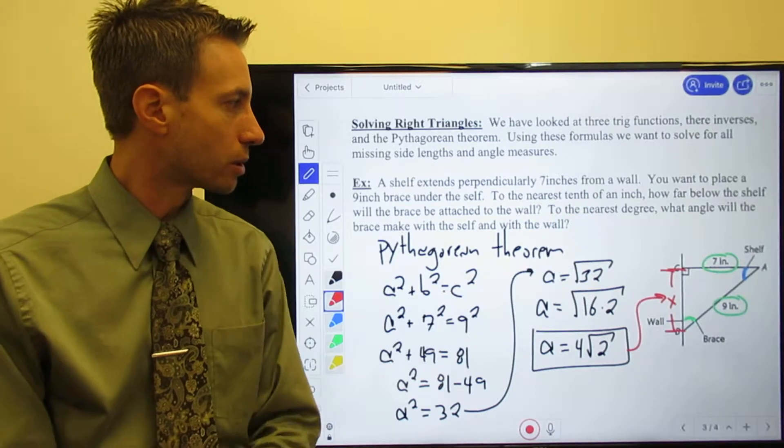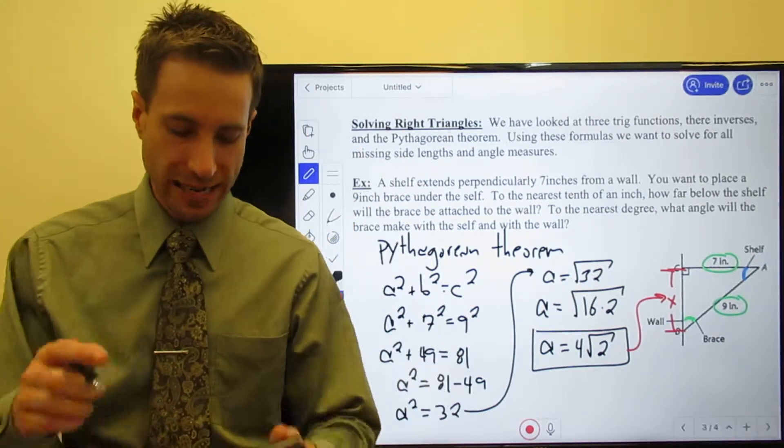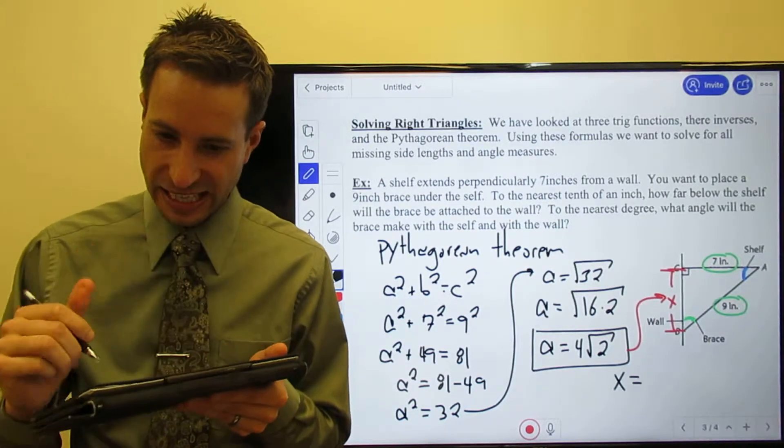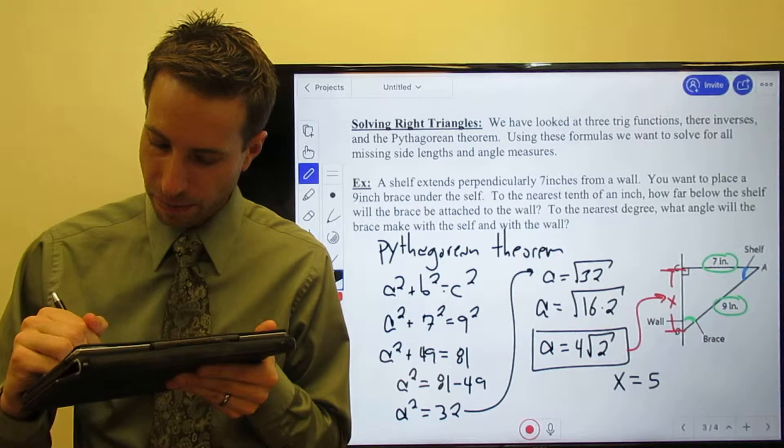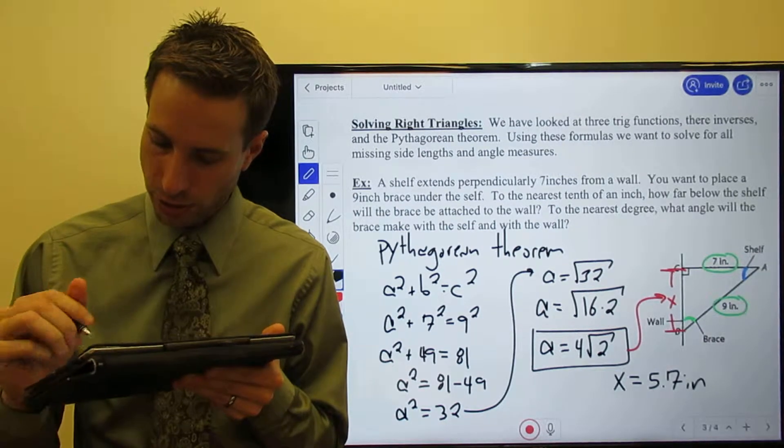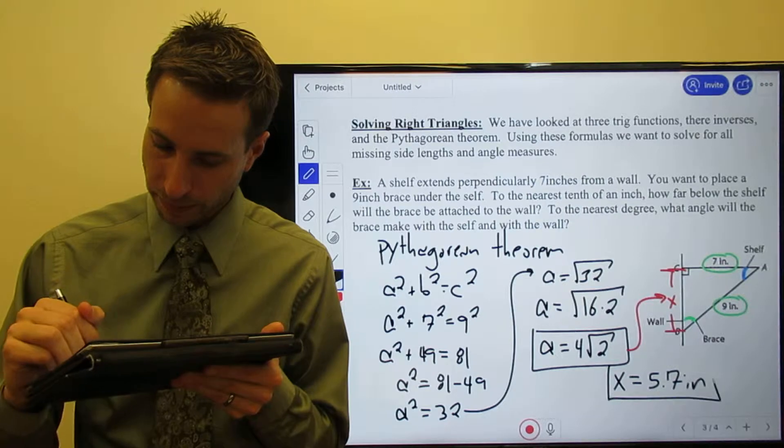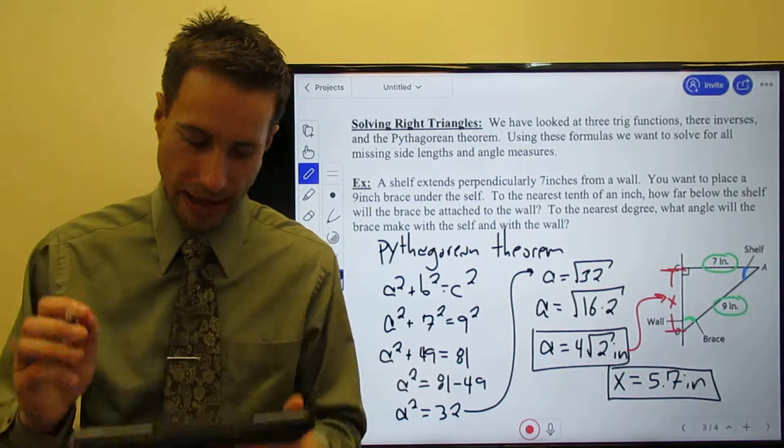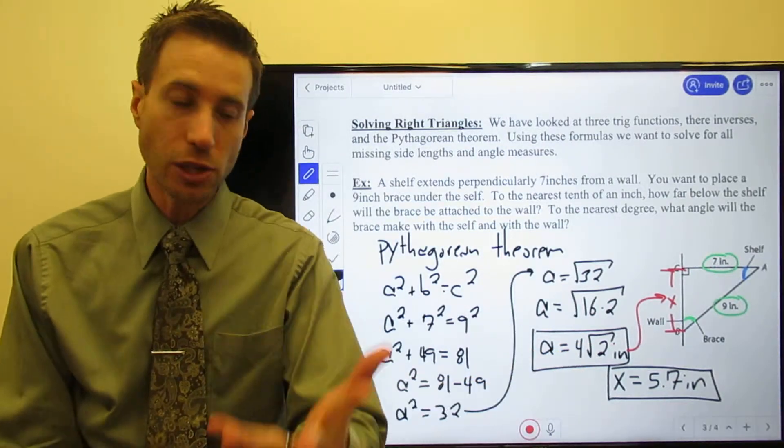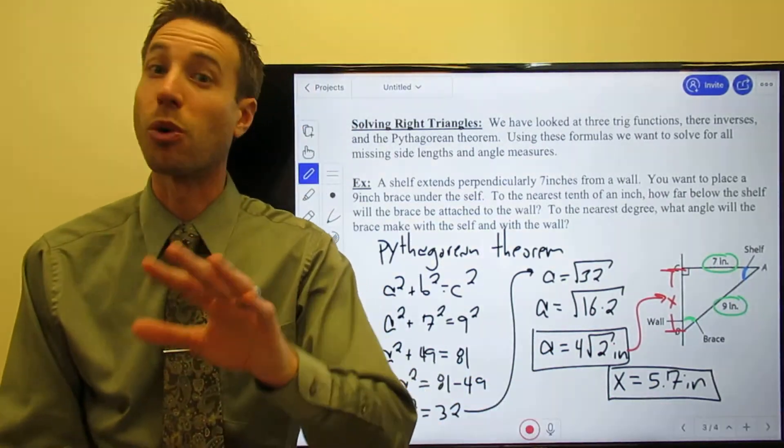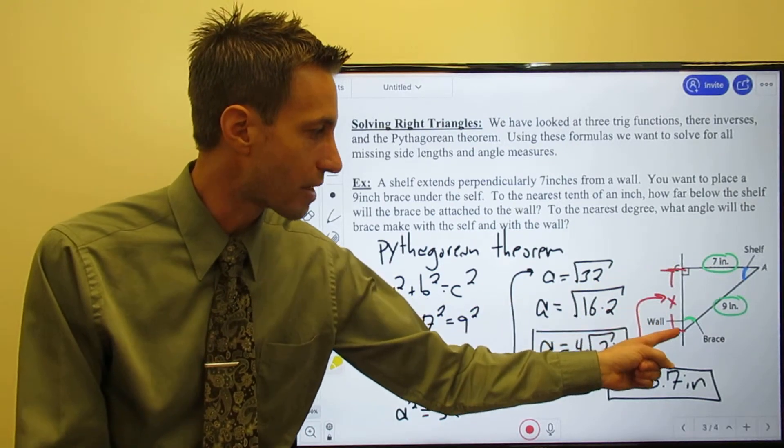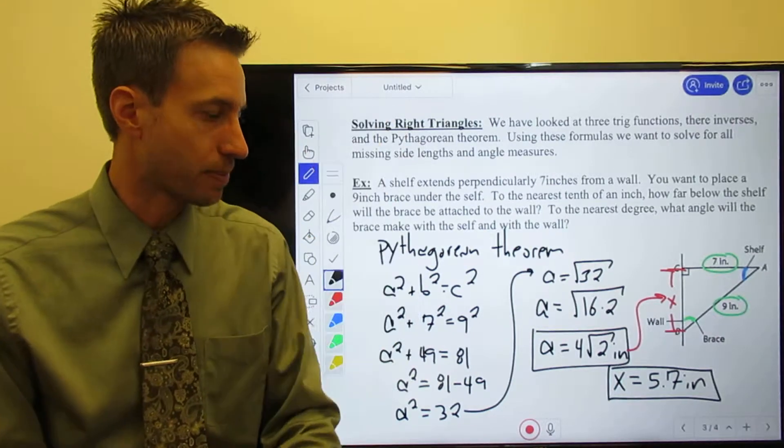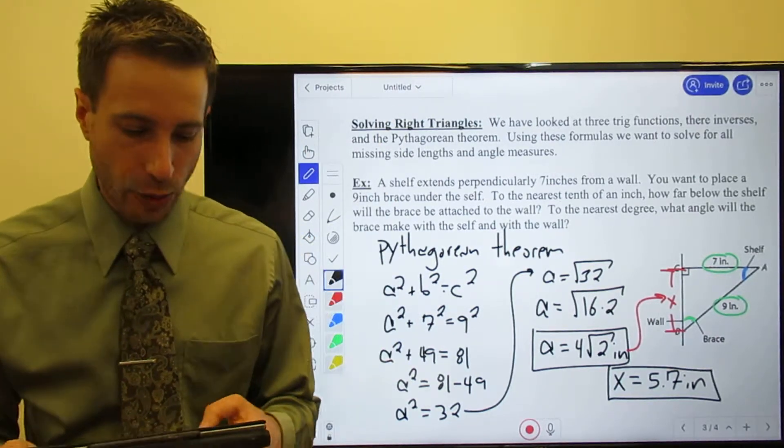Here's what you wind up with: x = 5.7 inches. Both of those mean the exact same thing. I could even put inches on that one as well - 4√2 inches or 5.7 inches, they mean the exact same thing. That is how far down the wall that brace has been attached to the wall - it's down 5.7 inches. OK great, let's keep going.